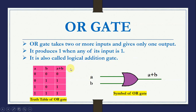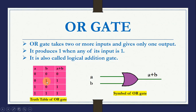Let us see the truth table of two boolean variables A and B. The values are 00, 01, 10, and 11. For A plus B: for 00 it is 0, for 01 it is 1, for 10 it is 1, and when both inputs are 1, it is 1.